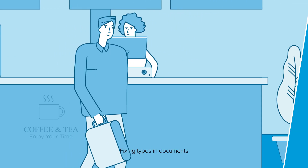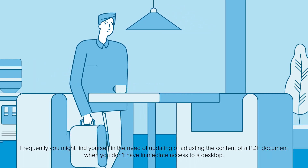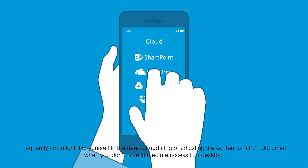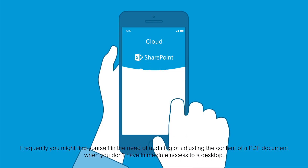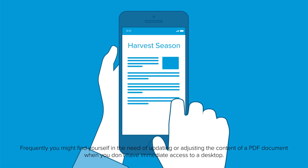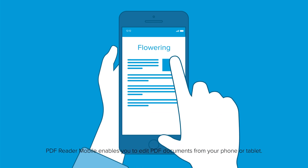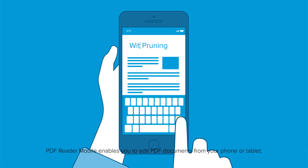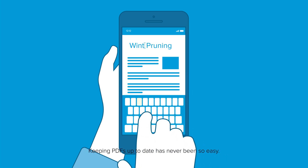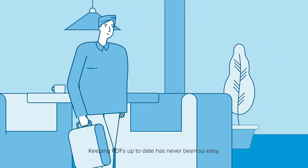Fixing typos in documents. Frequently you might find yourself in need of updating or adjusting the content of a PDF document when you don't have immediate access to a desktop. PDF Reader Mobile enables you to edit PDF documents from your phone or tablet. Keeping PDFs up-to-date has never been so easy.